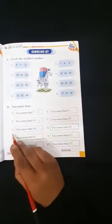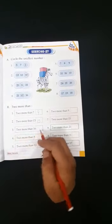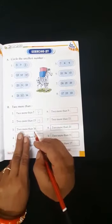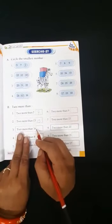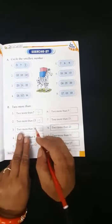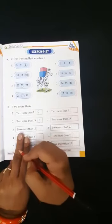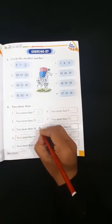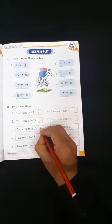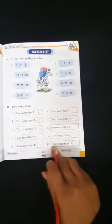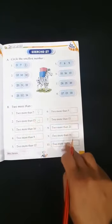Come to the next. Number 3. 2 more than 16. Again, open 2 fingers and count 2 numbers. After 16, 17, 18. So, we will write here 18. Okay, children? In this manner, you should complete the remaining exercise.